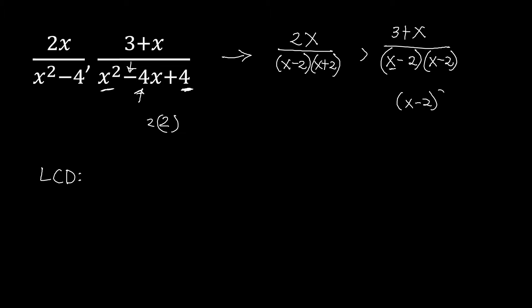Now writing the LCD: we list the factors. We have (x−2) from the first denominator. The second denominator also has (x−2), but raised to the power of 2, so we take the highest exponent: (x−2)². Then we include (x+2). So our LCD is (x−2)² times (x+2). You may leave it in factored form, as this will be used in other steps later.